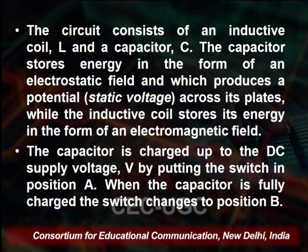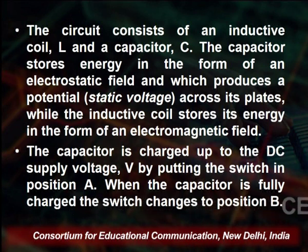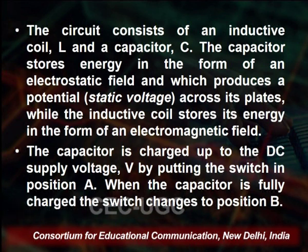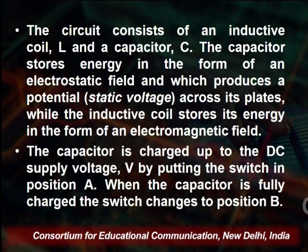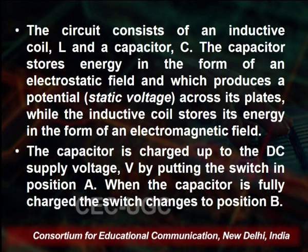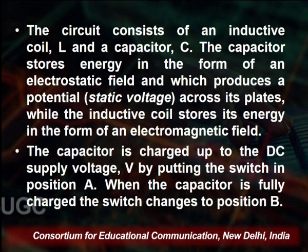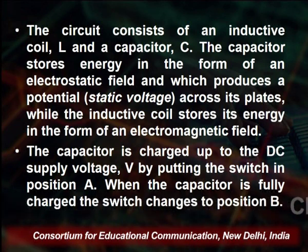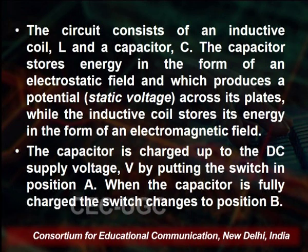The capacitor is charged up to the DC supply voltage V by putting the switch in position A. There are two points, A and B, in the diagram. When the capacitor is fully charged, the switch changes to position B.